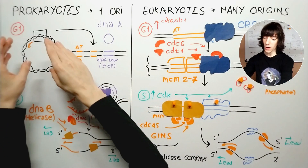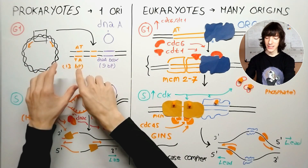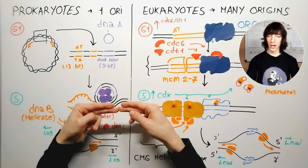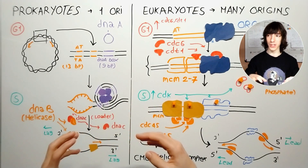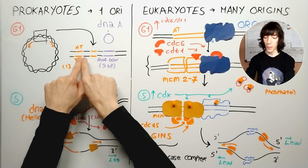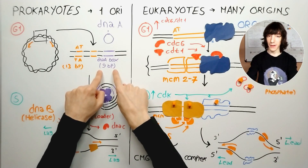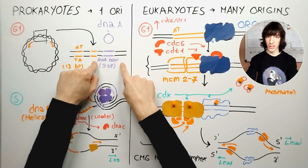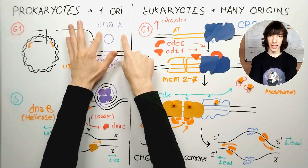If we take a close-up look at that origin of replication, we will see some interesting sequences. Mainly, a lot of A's and T's in groups of about 13 base pairs, and that is because A's and T's only make two hydrogen bonds when they pair with one another, whereas G's and C's make three hydrogen bonds. If you want to separate the strands, it's easier to do it in an area with a lot of A's and T's. We also have another kind of sequence — these come in nine base pairs, and we have multiple of them. These are the DnaA boxes, and they are specific binding sites for DnaA proteins, which we also call initiation proteins.